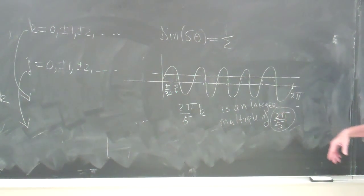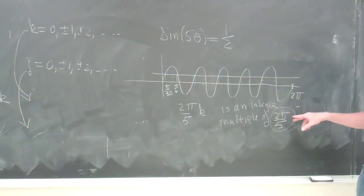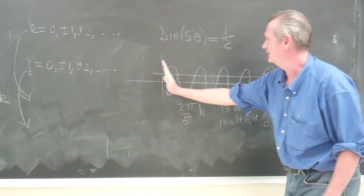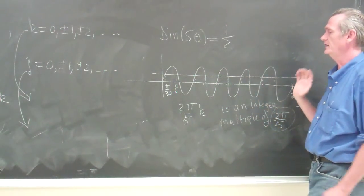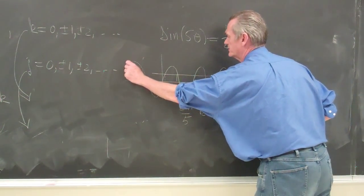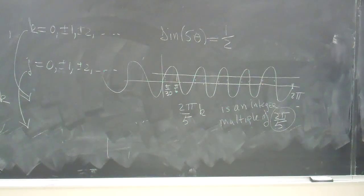And 2 pi over 5 is 6.28 over 5, so it's a little bit more than 1 and 1.2, and that's what's happening every step of the way here. And of course it happens if you move backwards along the sine curve.